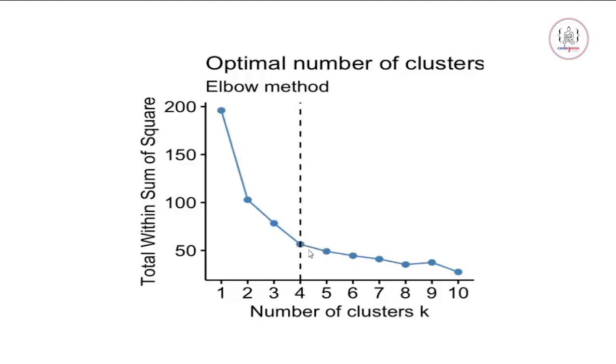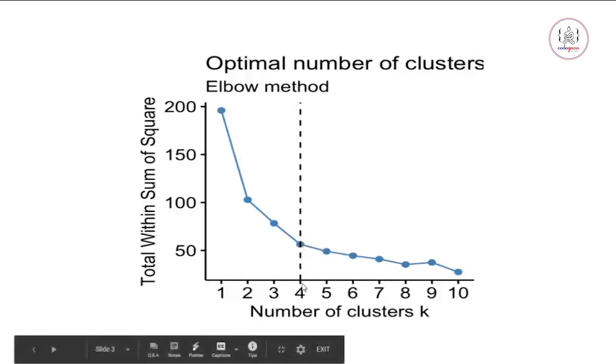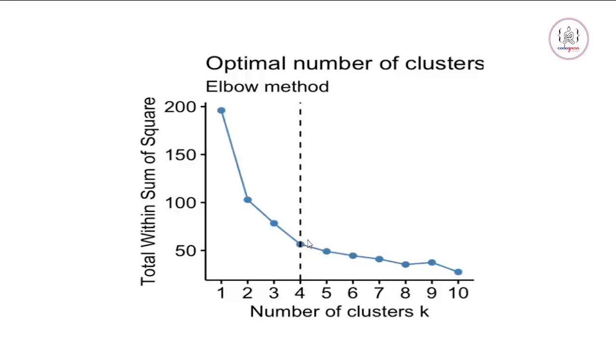So we select k equals 4 as our optimal number of clusters and we move forward with clustering with these k groups. This is how we find the right value of k. This is one method which is widely used. There are other methods as well.